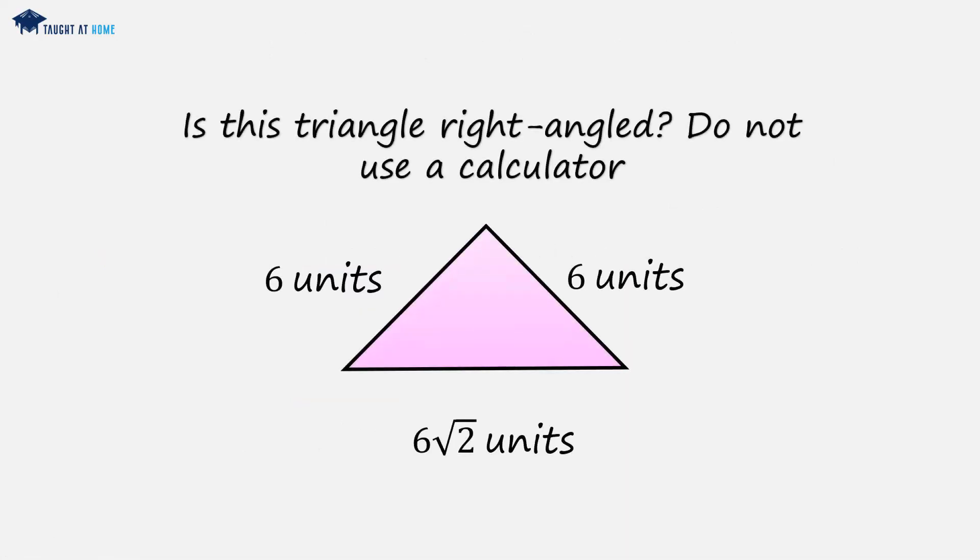Example 2. Is this triangle right angled? Do not use a calculator. We're given two shorter sides of 6 units each, therefore we have an isosceles triangle. And we're given a hypotenuse of 6 root 2 units. So we can call the two shorter sides a and b, and the hypotenuse c.